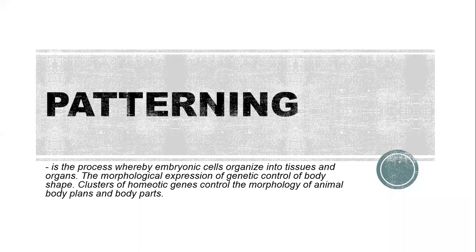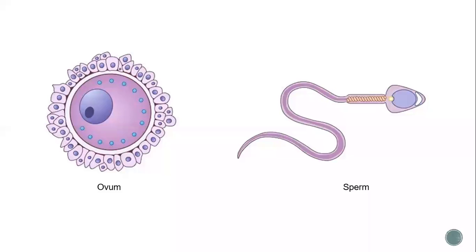Patterning is the process whereby embryonic cells organize into tissues and organs — the morphological expression of genetic control of body shape. Clusters of homeotic genes control the morphology of animal body plans and body parts.